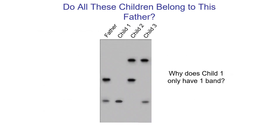Here's an example with a father and his three children — they all definitely could have come from that father. We're only looking at one VNTR here, so we should look at more to be sure, but the results match. The one interesting thing is that the first child only has one band. That child has two copies that are the same — for that one VNTR locus, they happened to have two identical copies with respect to number of repeats. The father gave them a copy, the mother gave them a copy with the same number of repeats, so when run on gel we only see a single band.